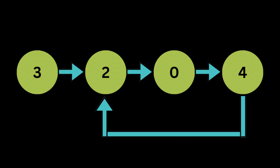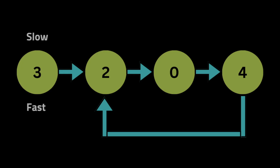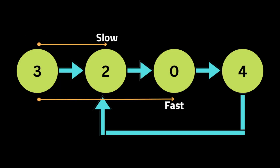Let's say we have this input linked list where the tail has a next reference pointing to the second node — the node with the value 2 — and we want to check if there is a cycle in it. First, we initialize two pointers, slow and fast, both pointing to the head of the linked list, which is the node with the value 3.